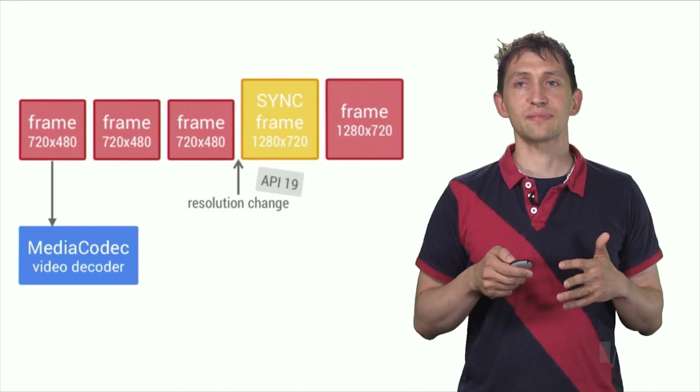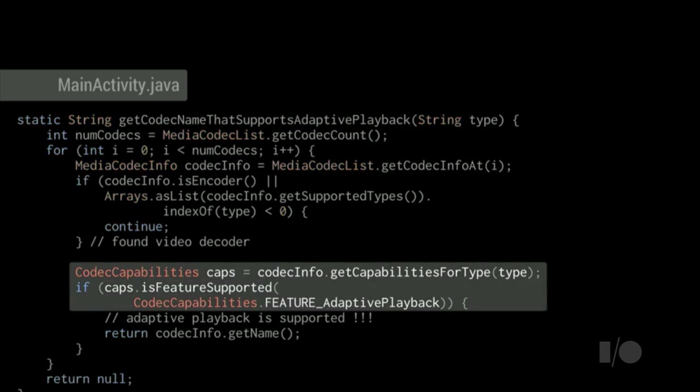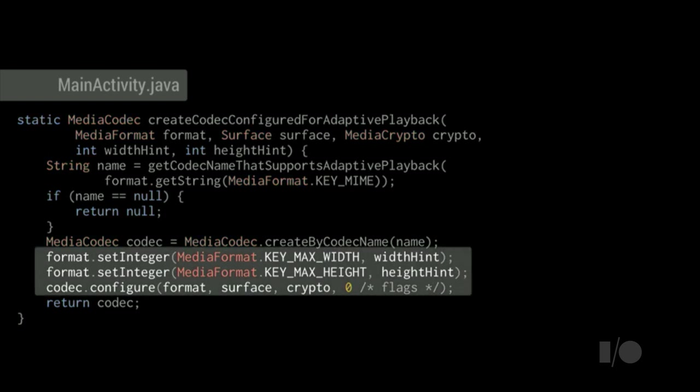Before you can rely on the adaptive playback features, you need to verify that it is supported by the codec you are using, by calling the Is Feature Supported API. You enable adaptive playback during codec configuration using two special keys, max width and max height. These form a hint for the maximum resolution that has to be supported by the codec. If the configuration succeeds, the codec is expected to switch resolutions, the codec is expected to switch to resolutions smaller than the hint in a seamless fashion.